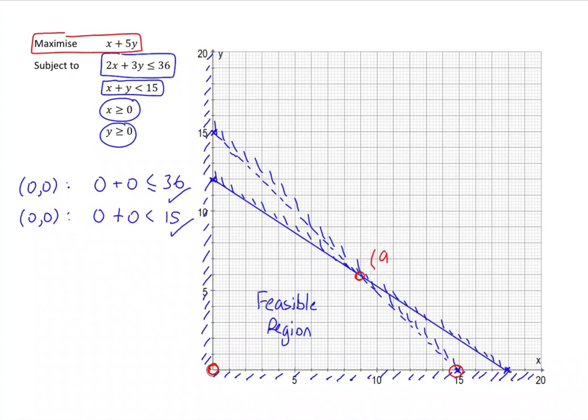So, that point is 9, 6. And, of course, we have the 0, 0. And, lastly, we've got this point up here. And that is the point 0, 12.